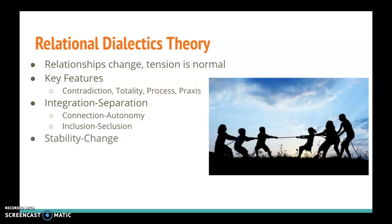Another major category of tension is stability and change. Within the stability-change category, internally, a couple might experience the tension between routine and novelty. Ultimately, we want routines in our lives for stability — we like that we watch the same TV show every night while we eat dinner, for example. But at the same time, we also want to mix things up and bring in some excitement, some novelty, some newness. So there's this tension between wanting to stay in the routine and wanting to try something new within that relationship.